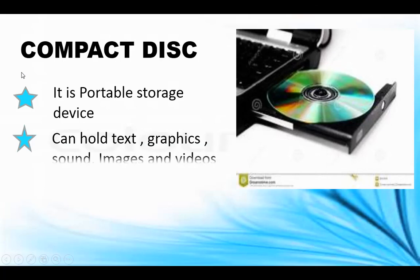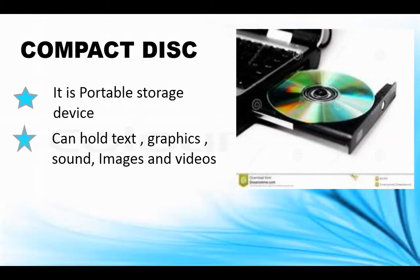The second essential storage device is CD, which stands for compact disk. It is an optical device — optical means light or vision. Its structure is a thin, shiny circular disk which can store audio, video, text, graphics, software, etc. It can hold 700 MB of data. To access data from a CD, you must place it in a CD drive located on the front panel of the CPU box.